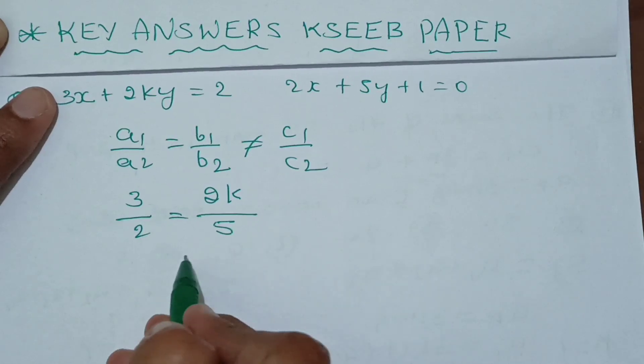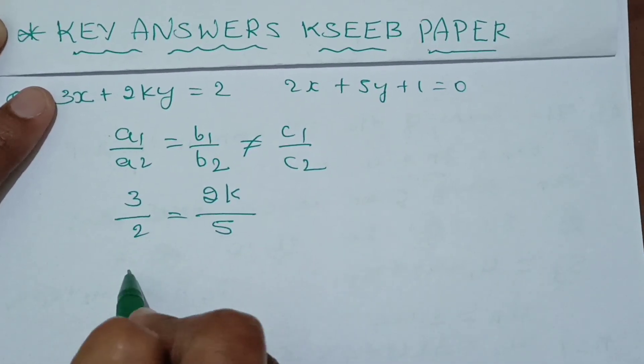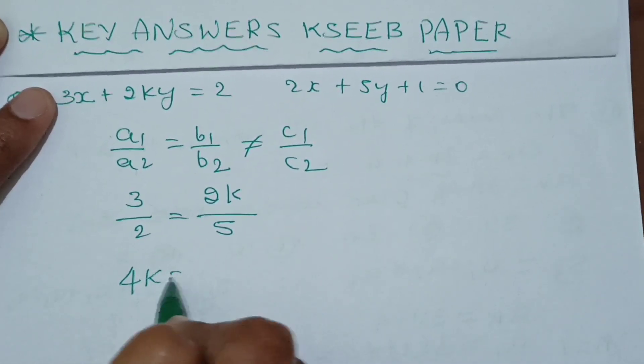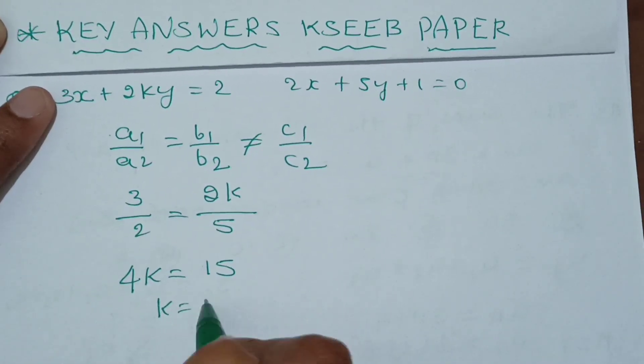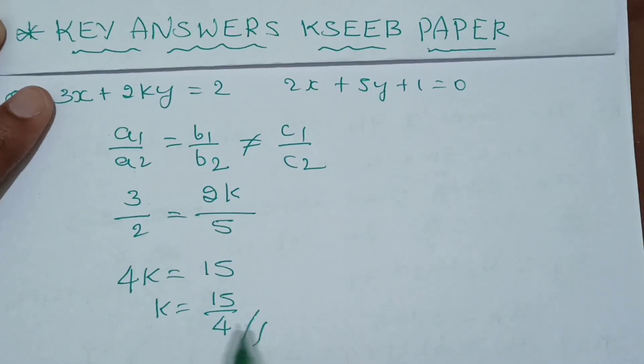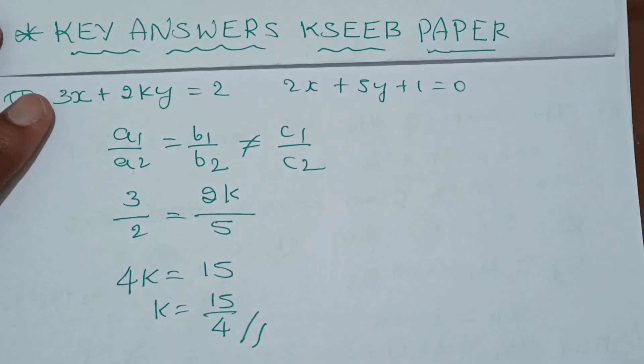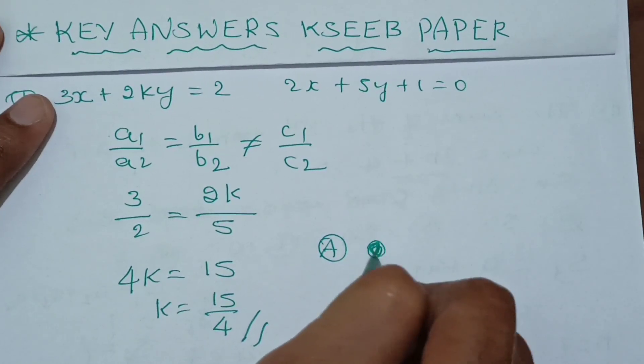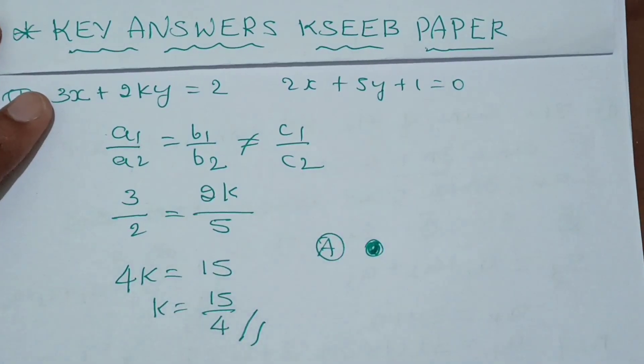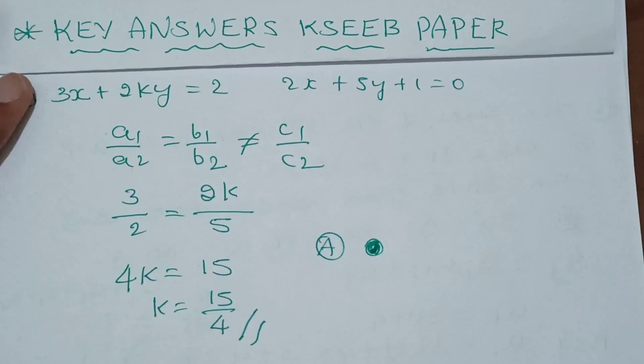Now make a cross multiple. Cross multiple is 2K into 2, it is 4K equals to 5 into 3, which is 15. K is equal to 15 by 4. So this is the first question answer.